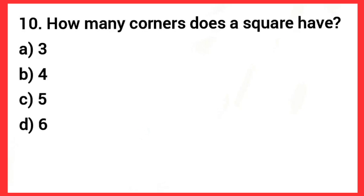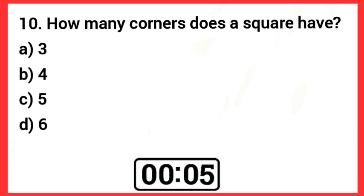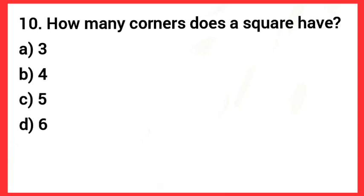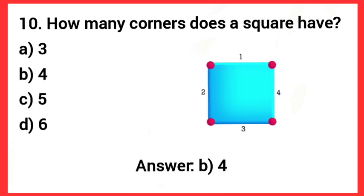How many corners does a square have? Answer: Option B, 4. A square has four corners.